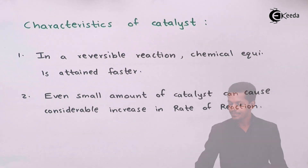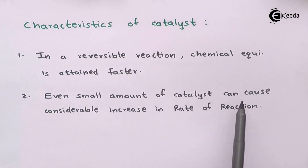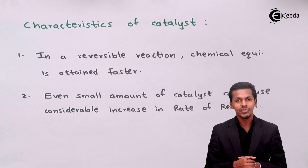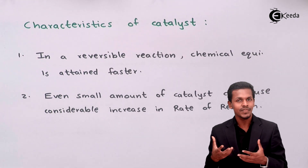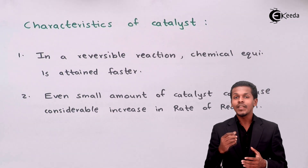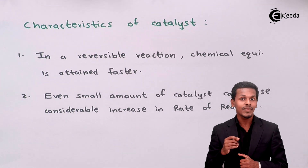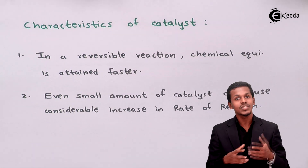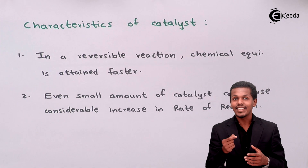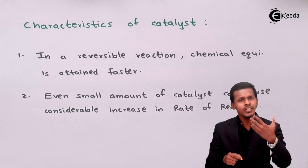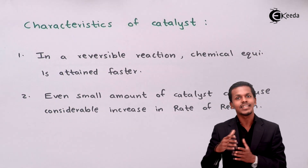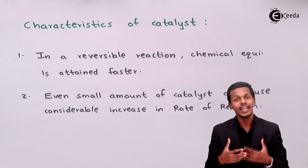Even a small amount of catalyst, when added to the reacting mixture, causes a considerable increase in the rate of reaction. The reactants react with each other due to the presence of the catalyst, and the product is formed very soon. The catalyst does not take part in the reaction — suppose A reacts with B to form C plus D in the presence of a catalyst; the catalyst is retained and regenerated, and will again react with other molecules of A and B to form C plus D.